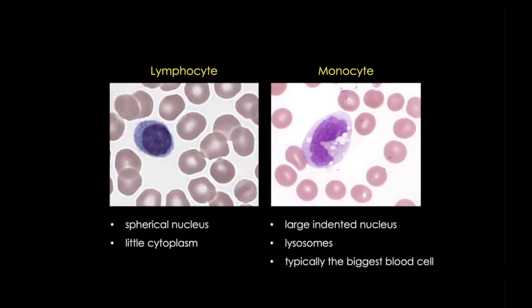I hope you can now appreciate the spherical, darkly basophilic nucleus and scant cytoplasm of the lymphocyte, and the large, indented nucleus and pale cytoplasm with lysosomes of the monocyte. I hope these tips will help you solve this case of mistaken identity. Thanks for stopping by.